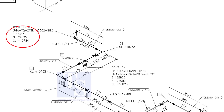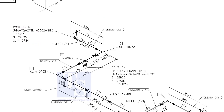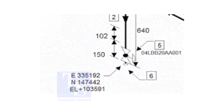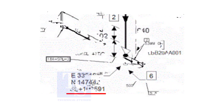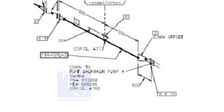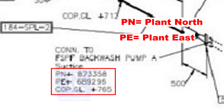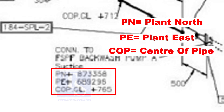See the starting elevation of the piping. E stands for east direction and N stands for north. GL is ground level. In some drawings you will see EL, which stands for elevation. And sometimes PN, PE, COP, etc. are given.